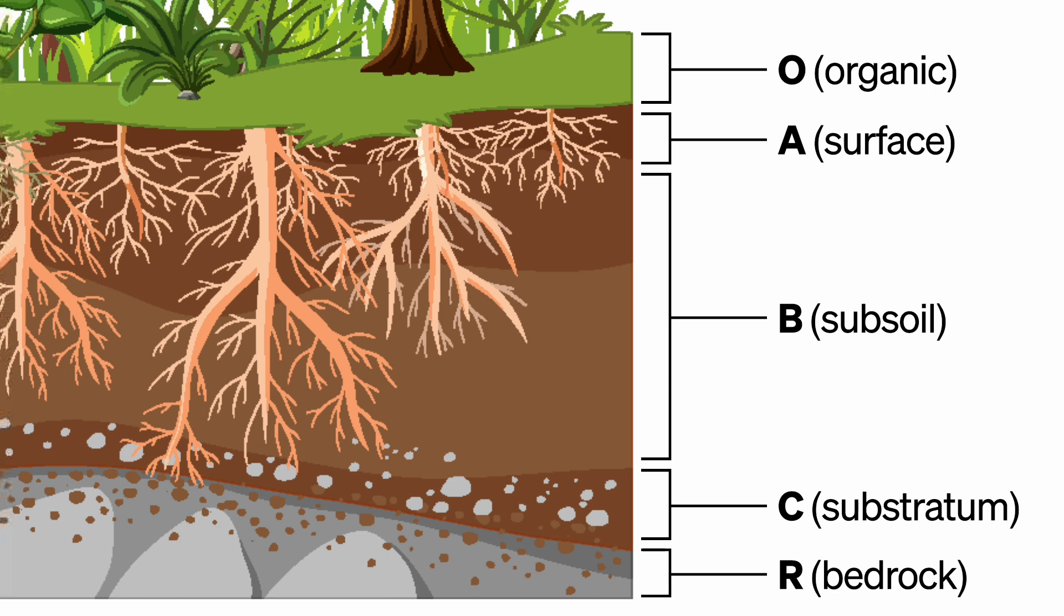This includes dead and decaying plant life, leaves, rotting tree stumps, and other organic matter that accumulates. This is the richest layer of soil and enables complex life to exist on the surface.